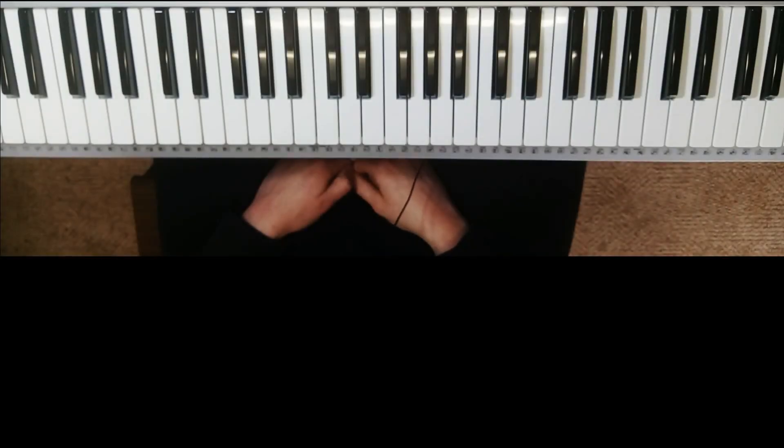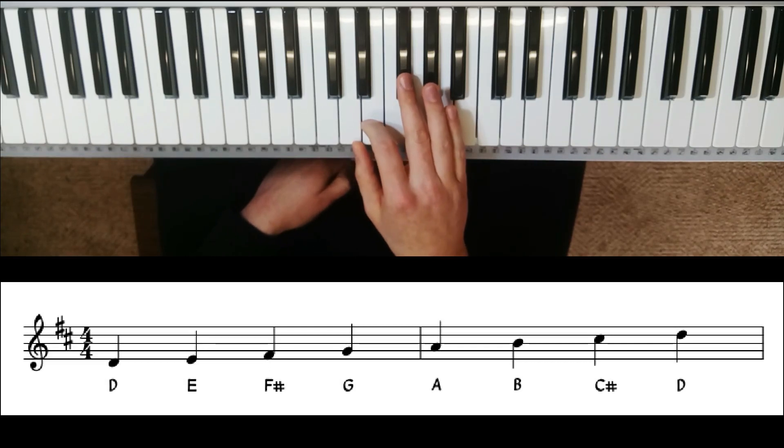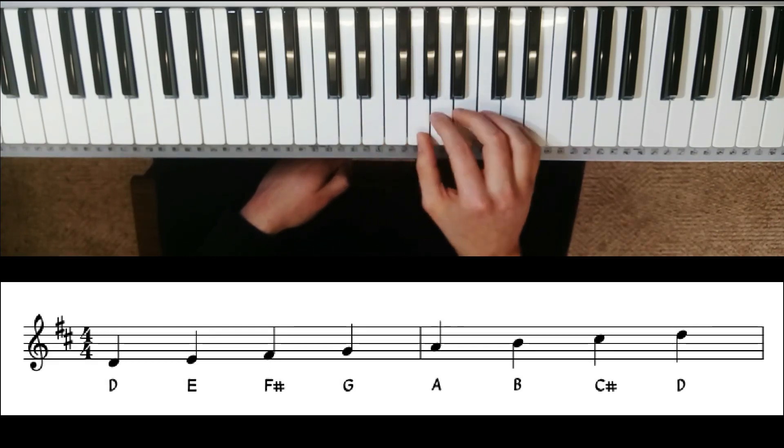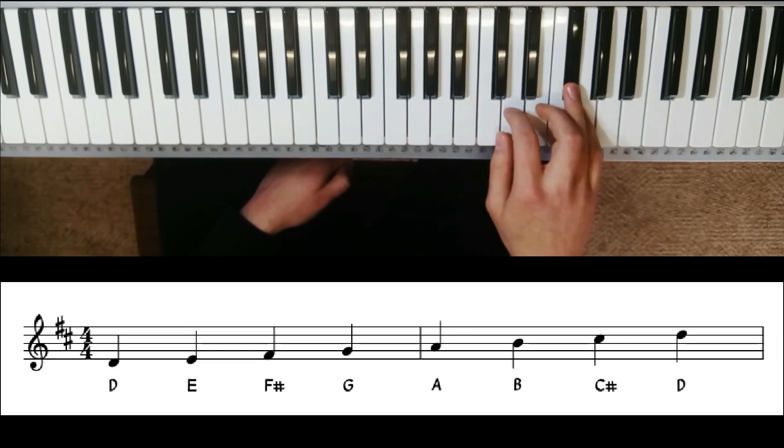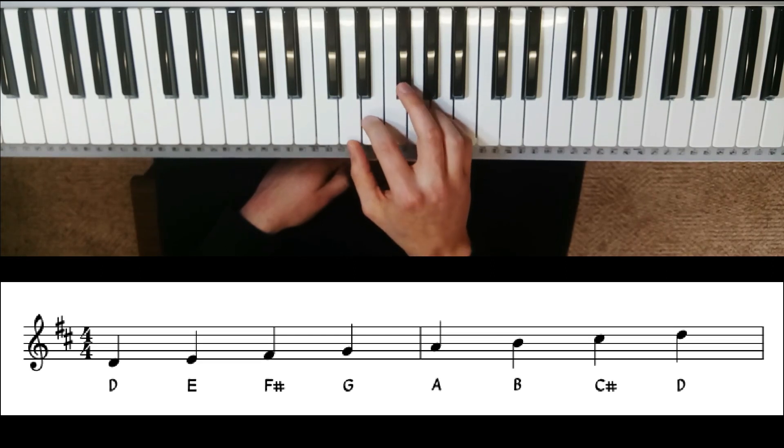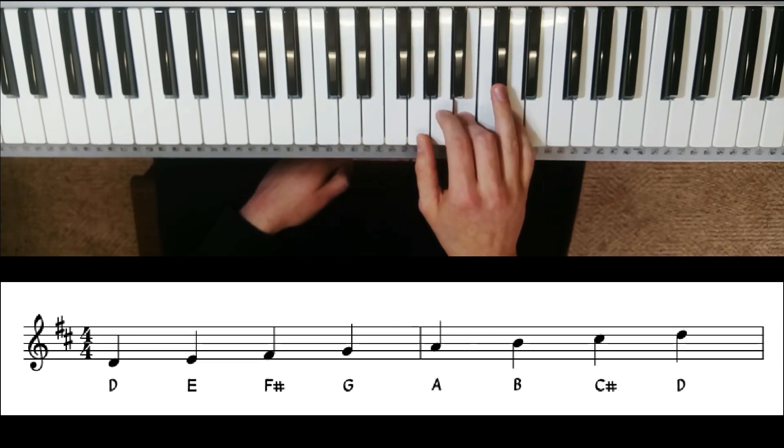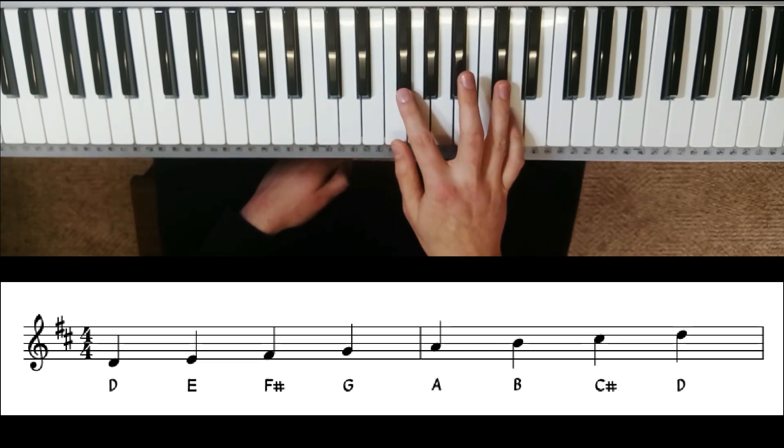Let's continue our series with the key of D major and the 2-5-1 in that key. So the key of D major has an extra sharp than the key of G major does. You'll recall from the key of G that we had the F sharp note. In the key of D we also have the F sharp note, but we also now have the C sharp. So we have two black notes that we need to keep on top of.